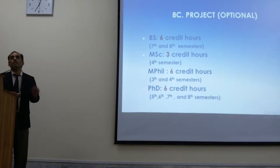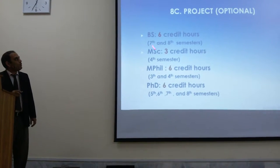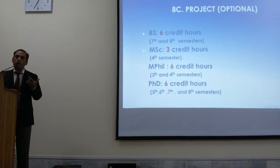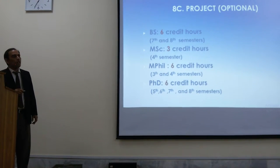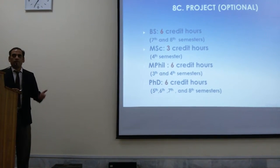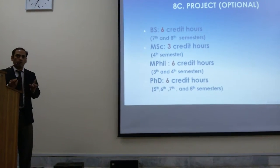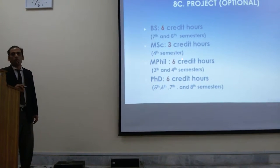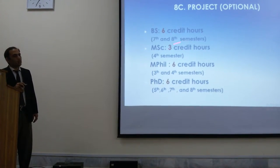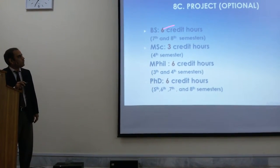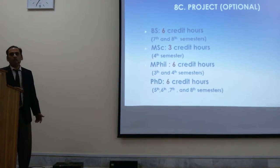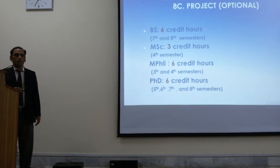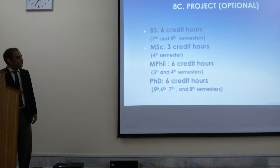The requirement for the MSc project is that your GPA must be greater than 2.5. If your GPA is greater than 2.5, you can have a project, which is optional. Otherwise, you will have ordinary or special courses. In MSc, 6 credit hours are reserved for thesis writing, which is kind of like a project.